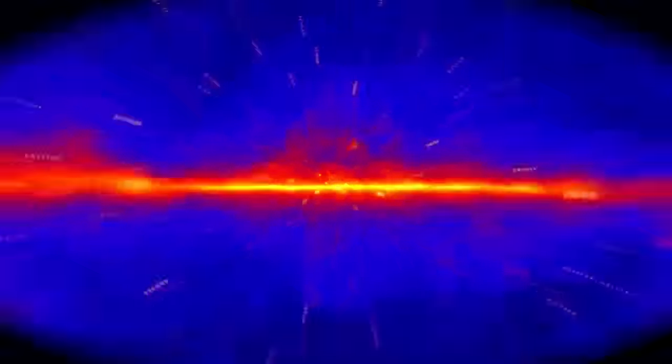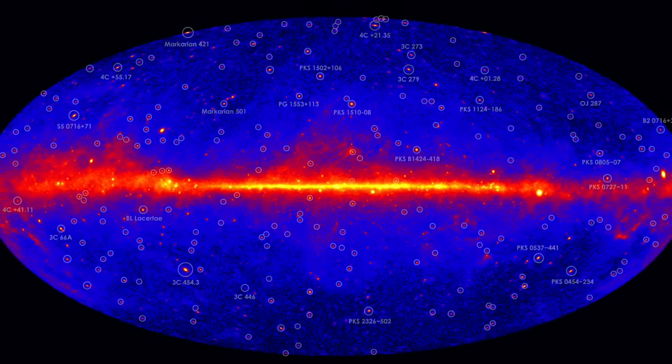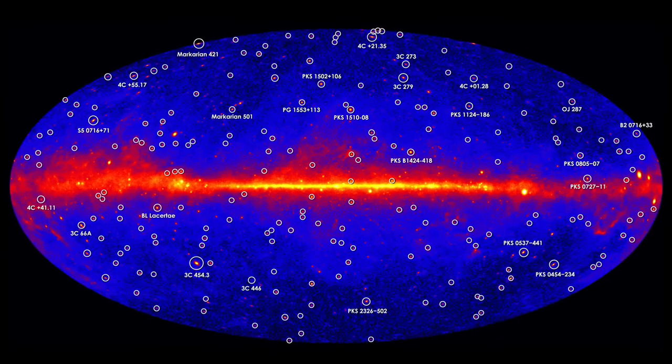Thanks to emissions powered by monster black holes, galaxies called blazars rank among the most luminous objects in the universe. They're also the most common sources of high-energy light seen by NASA's Fermi Gamma-Ray Space Telescope.